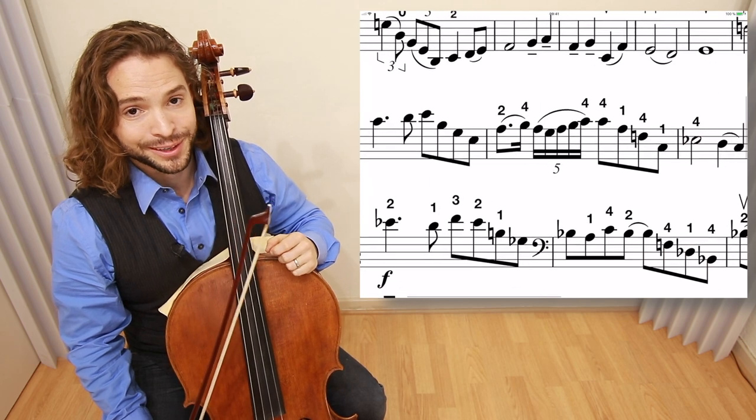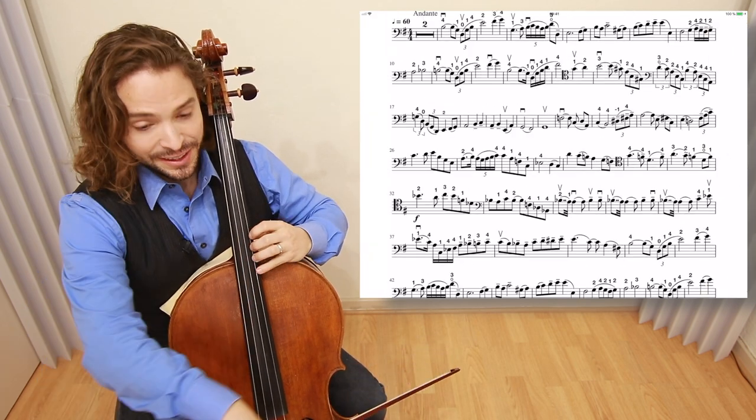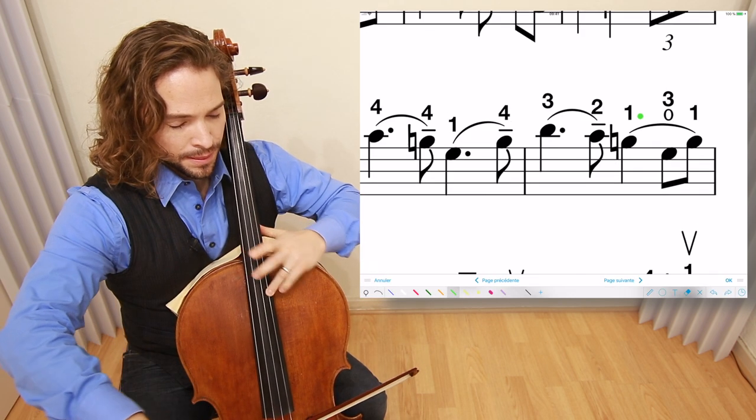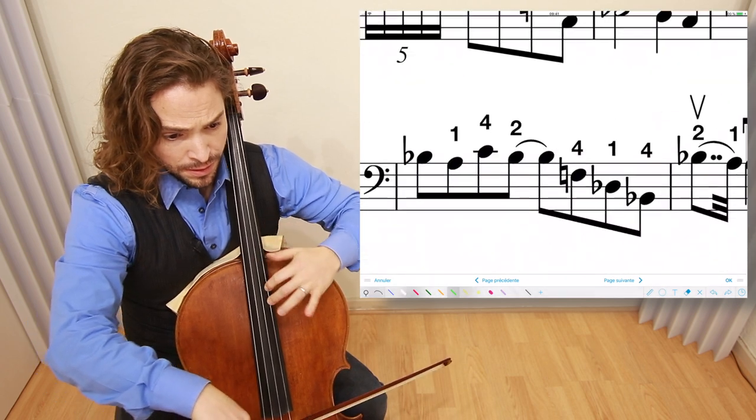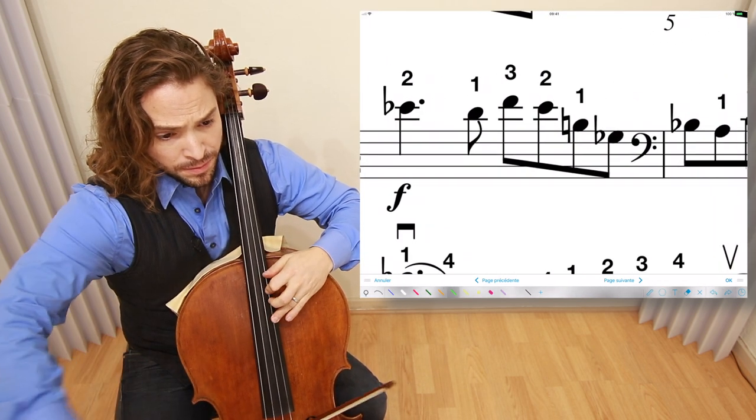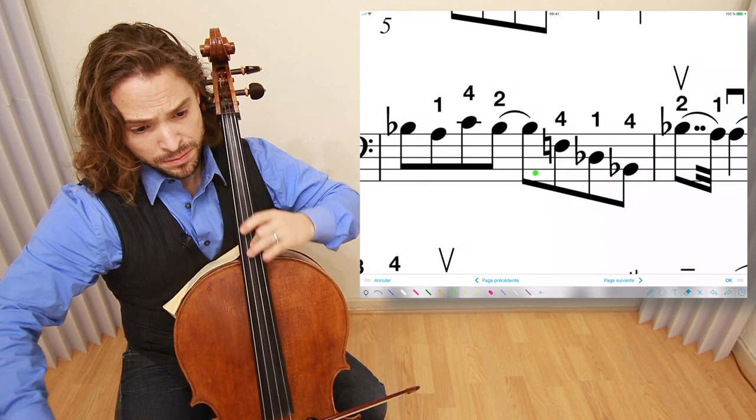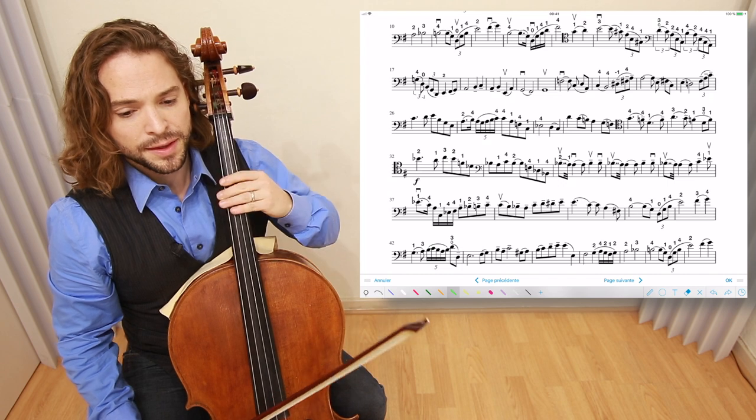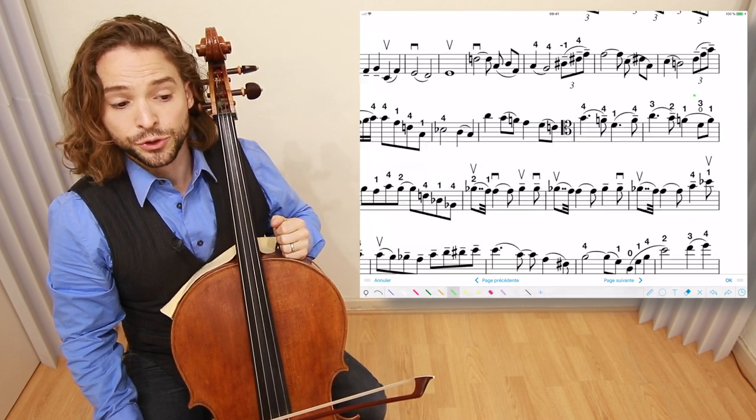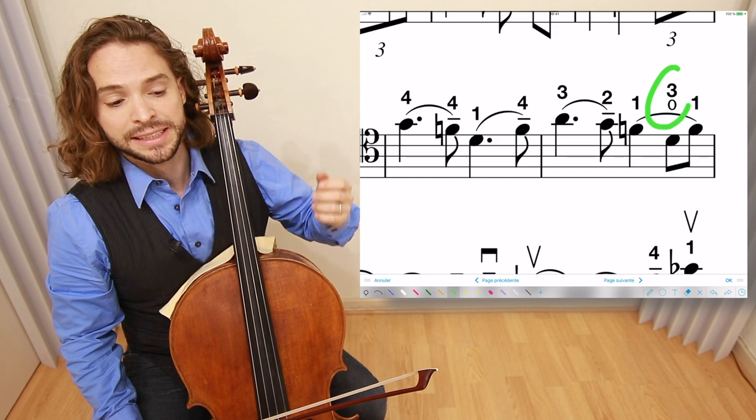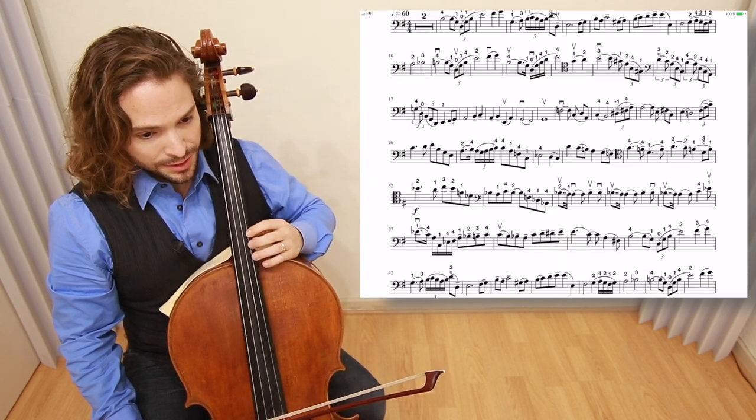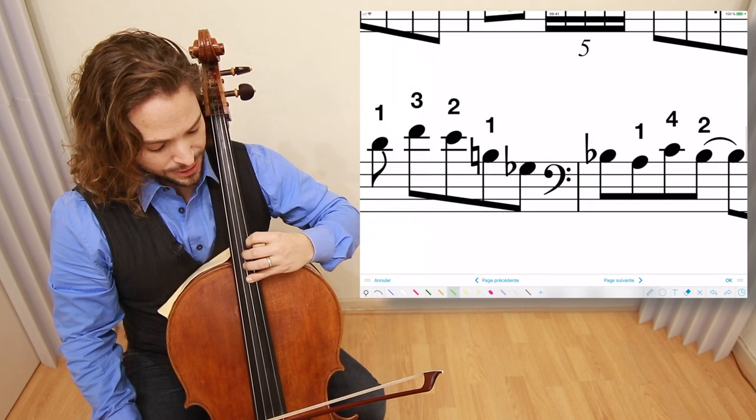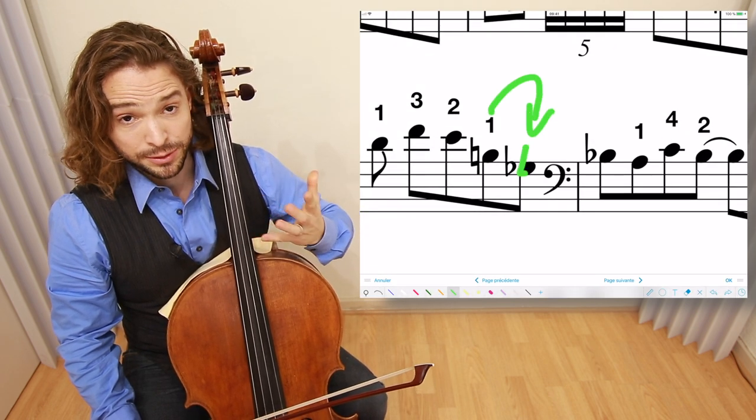Moving on, we are in measure 30. The best I can suggest you to do is in measure 31, use the harmonic D. And then when you shift back down, when you're doing that, the F natural to D flat to B, I do a one, four, one, because I don't have large hands.